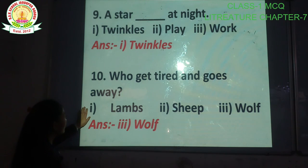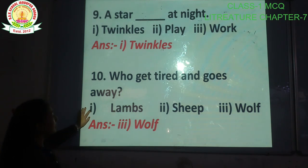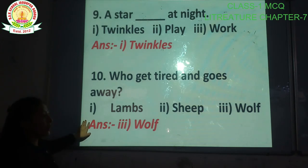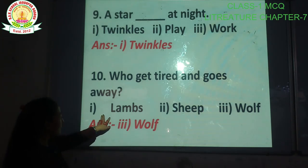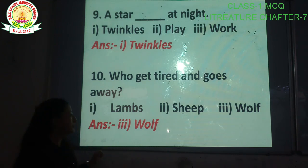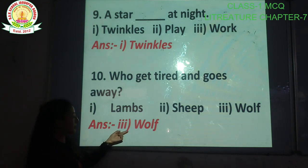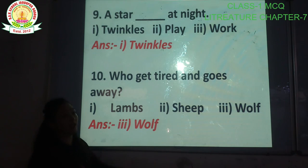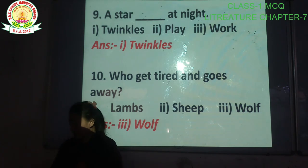Our last question of this video is: who gets tired and goes away? Kon thak gaya aur wapas chala gaya? Options: lambs, sheep, wolf. The correct answer is option number three, wolf. Wolf thak gaya tha.